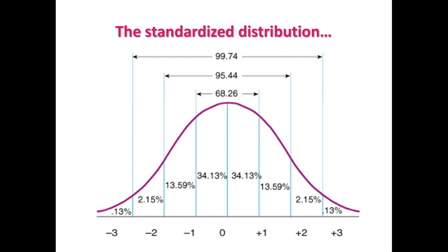This is the percentage breakdown. In a normalized distribution, this is what percentage of the population or sample falls into those categories. In the middle, we have our average. The percentage of people that score between 0 (average) and plus 1 — one standard deviation above the average — is 34.13%. And again, it's symmetrical, so whatever happens on the right-hand side happens on the left-hand side too. The percentage of people scoring between 0 and negative 1 standard deviation below the mean is also 34.13%. In other words, about 68% of us fall within plus or minus 1 standard deviation from the mean.